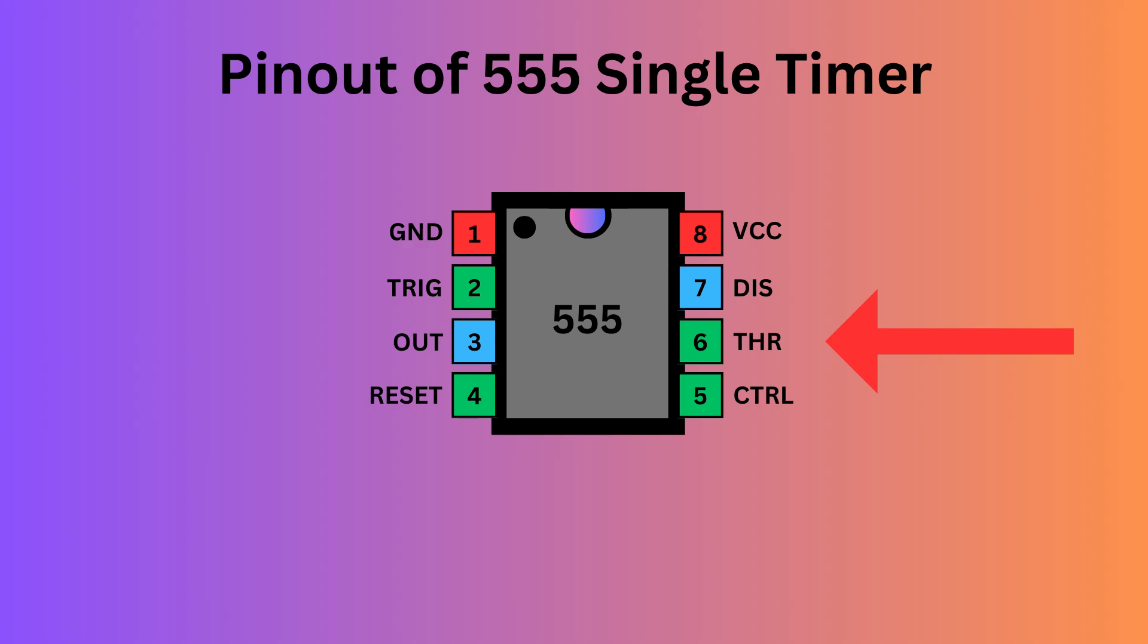Pin 6, the threshold pin, monitors the voltage of the capacitor in the circuit. Pin 7, the discharge pin, manages the timing capacitor's charge and discharge cycle. Pin 8, known as VCC, supplies power to the IC.